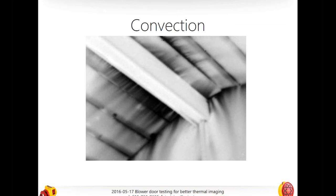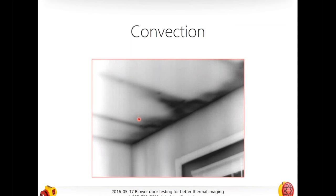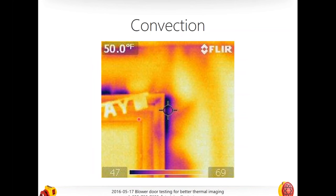Higher pressures may speed things up a little, but it all depends. It is possible that if you depressurize a house — which you need to do to see leakage from the inside — and it's very cold out with a big temperature difference, you could actually make everything so cold that you can't see anything. Andrew's concern is that you may normalize the house pressure with the outside too quickly at high speeds.